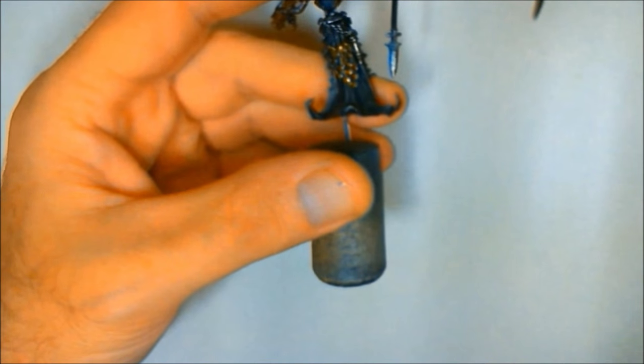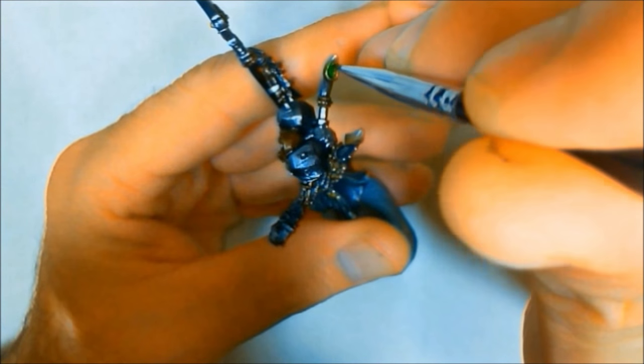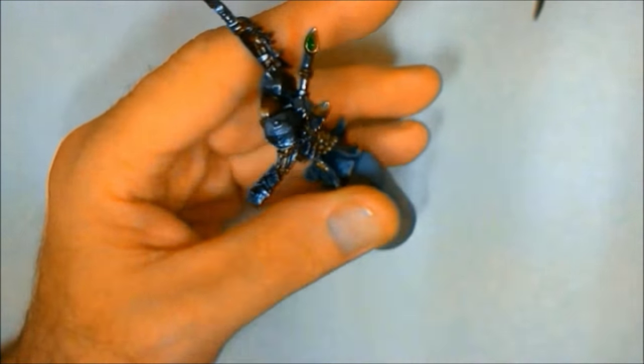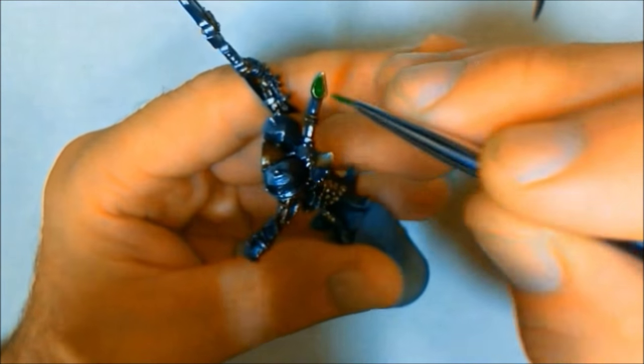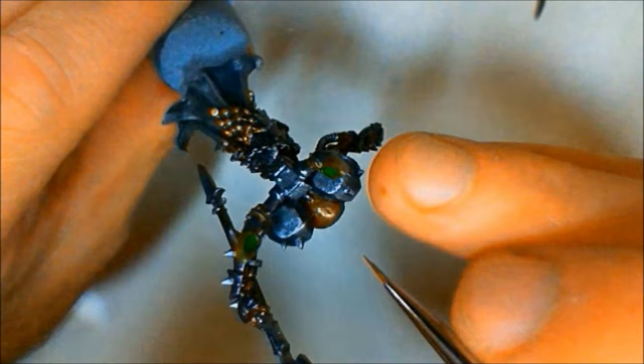Now we're doing the glow effects from the furnace and around the body. I'm using Worm Green by Privateer Press for this. Eventually I'll highlight that up with the Necrotite Green from P3.